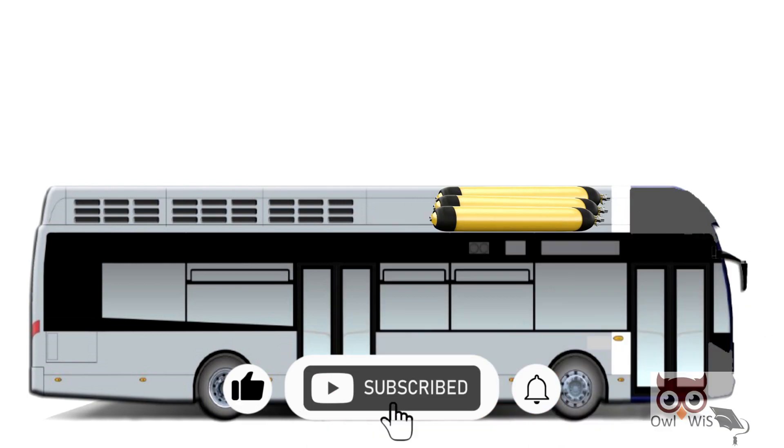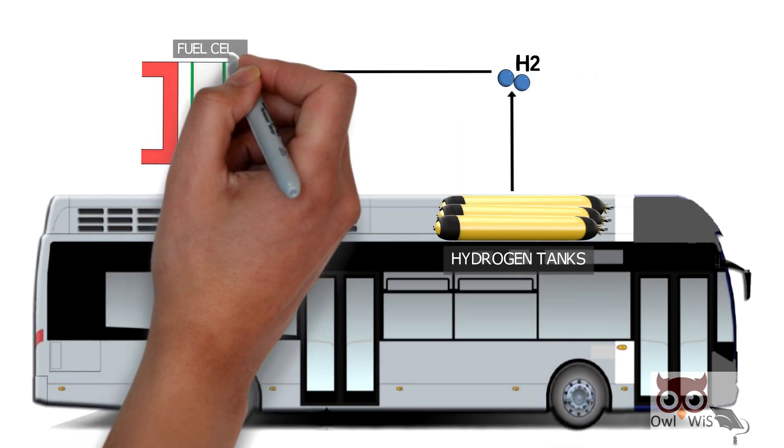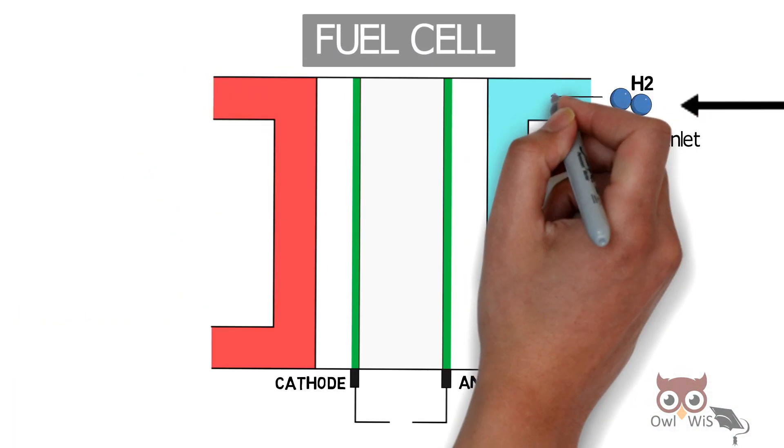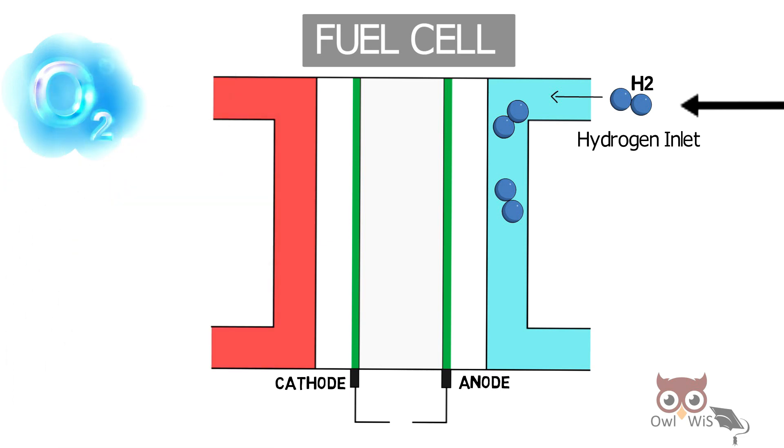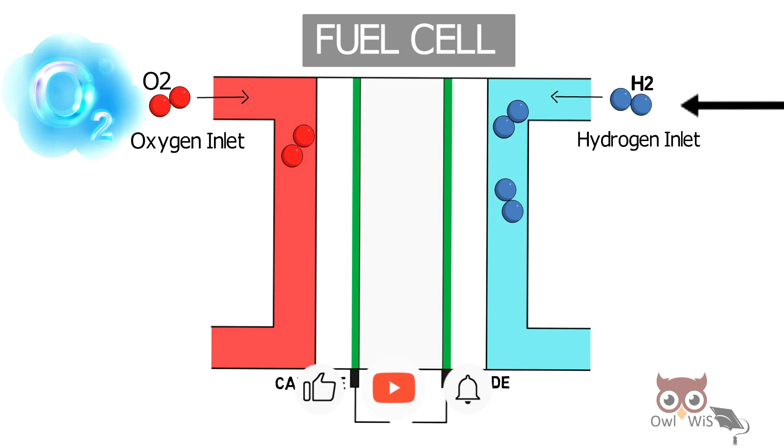The hydrogen tanks are present on the roof. Hydrogen is taken from the tanks and then enters the fuel cell through the hydrogen inlet. The oxygen from the air enters the fuel cell through the oxygen inlet.